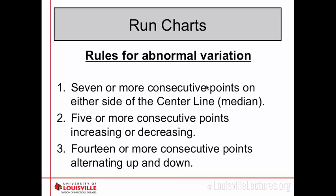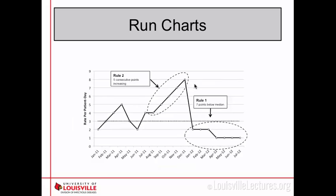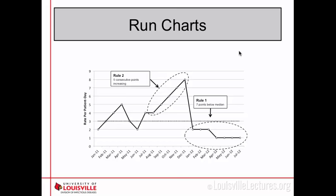That would just indicate there's something odd. Going back to our chart, you can see right here we have an increasing run of points — there's something going on causing the increase. If you run an intervention at that highest point month because you realize you keep increasing, you can then see that all subsequent points are below the median. That variation is very likely caused by the intervention, and you could use a run chart to track how well an intervention is working.